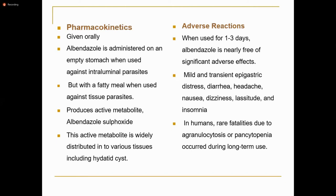Albendazole produces an active metabolite, albendazole sulfoxide, which is widely distributed into various tissues including hydatid cysts. This active metabolite is why albendazole is very effective against cystic diseases like cysticercosis and Echinococcus granulosus hydatid disease — it penetrates the cyst and enters the system. Adverse reactions: when used for one to three days, albendazole is nearly free of significant adverse effects. Mild transient epigastric distress, diarrhea, headache, and nausea may occur. Rare fatalities from agranulocytosis or pancytopenia can occur during long-term use.